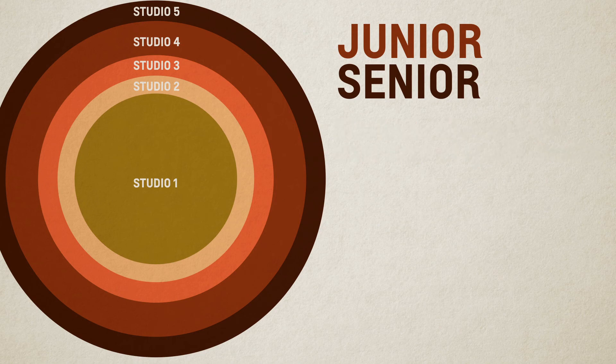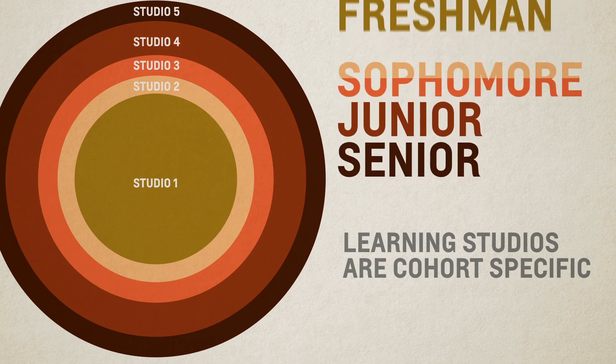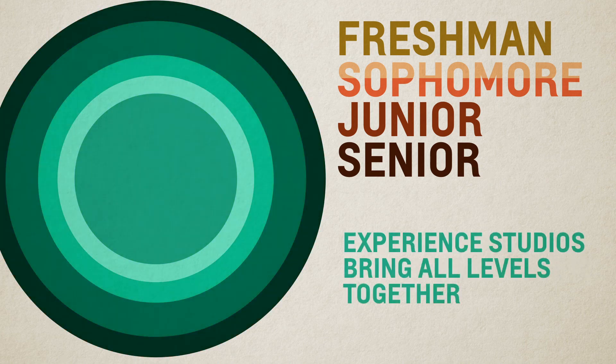The learning studios are cohort specific, meaning that only freshmen take level 1, sophomores levels 2 and 3, etc. The experience studios, on the other hand, bring all levels together.